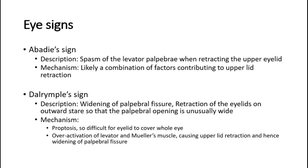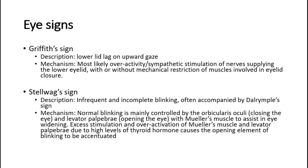Griffith's sign is lower lid lag on upward gaze, most likely due to overactivity or sympathetic stimulation of nerves supplying the lower eyelid, with or without mechanical restriction of muscles involved in eyelid closure. Stelwag's sign is infrequent and incomplete blinking, often accompanied by Dalrymple's sign. Normal blinking is mainly controlled by the orbicularis oculi and levator palpebrae, with Mueller's muscle assisting in eye widening. Excess stimulation and overactivation of Mueller's muscle and levator palpebrae due to high levels of thyroid hormone causes the opening element of blinking to be accentuated.